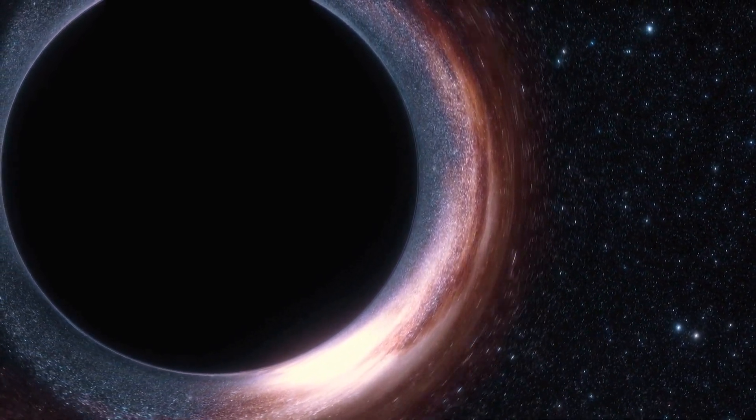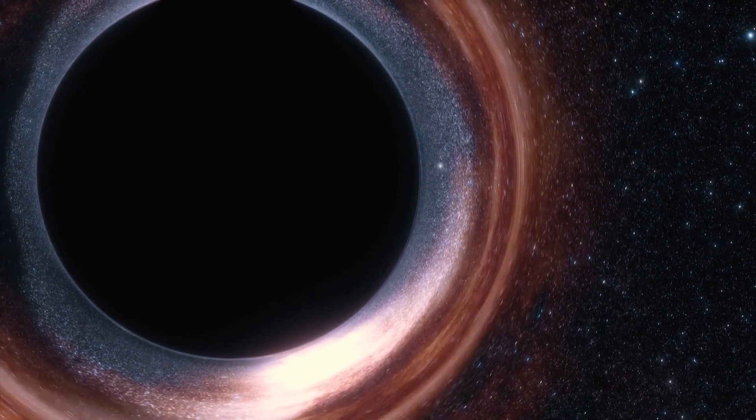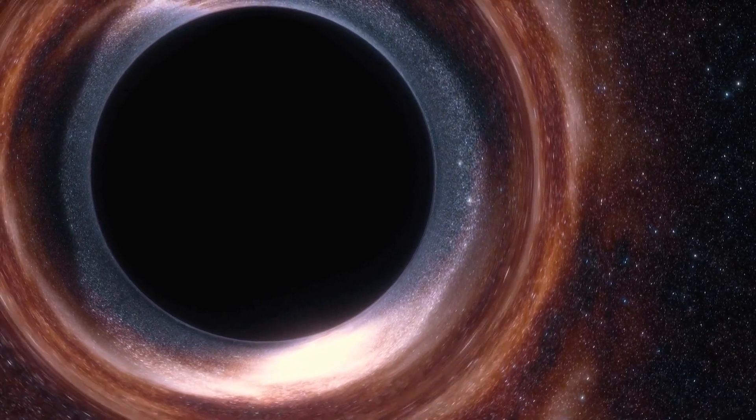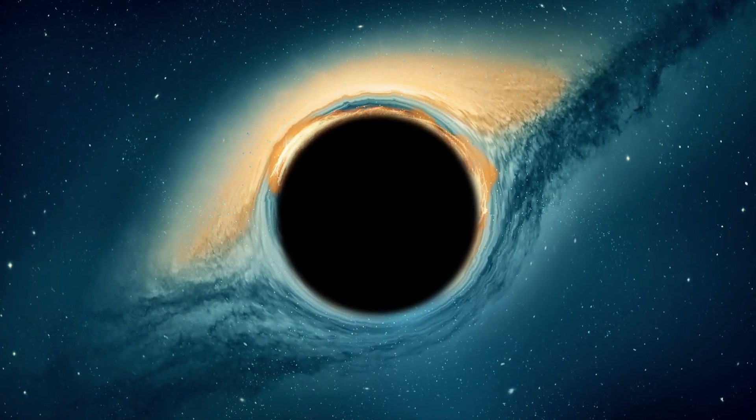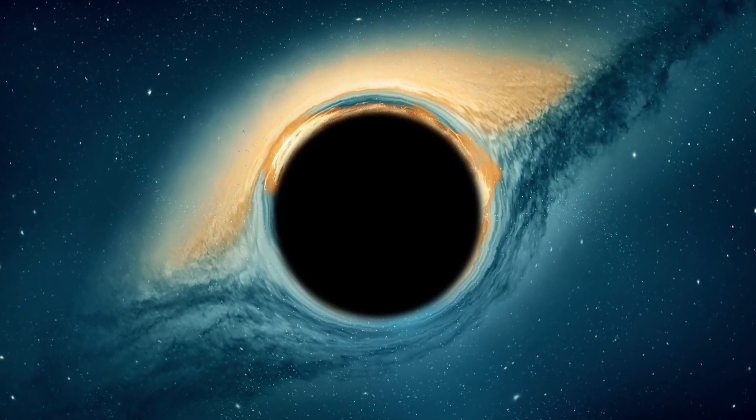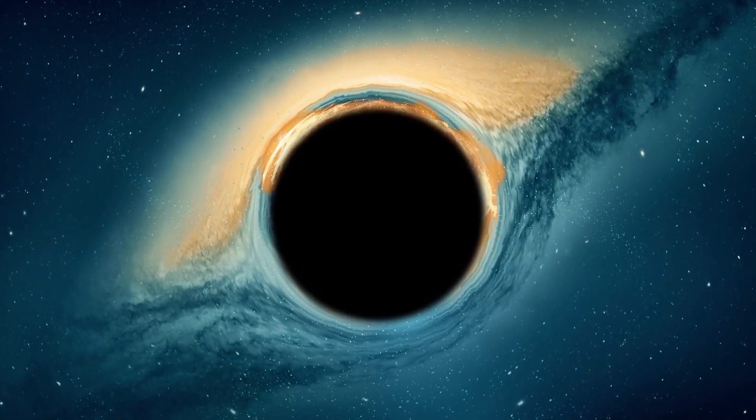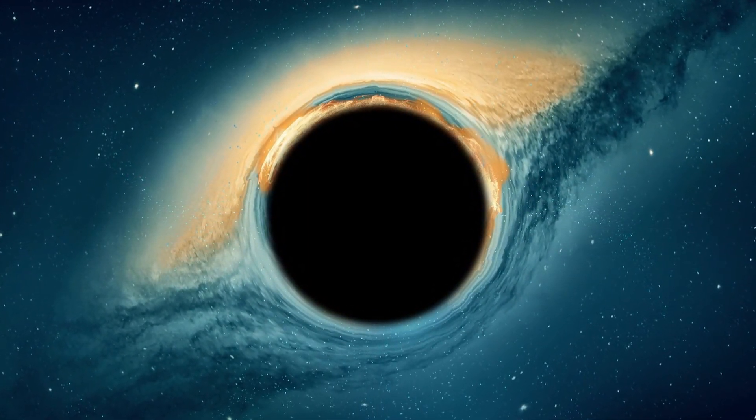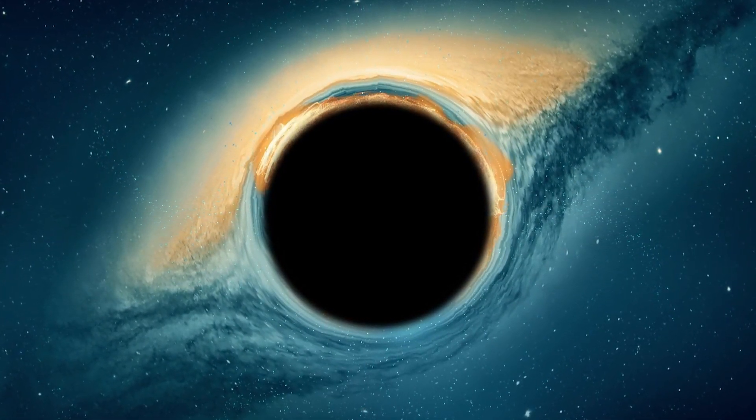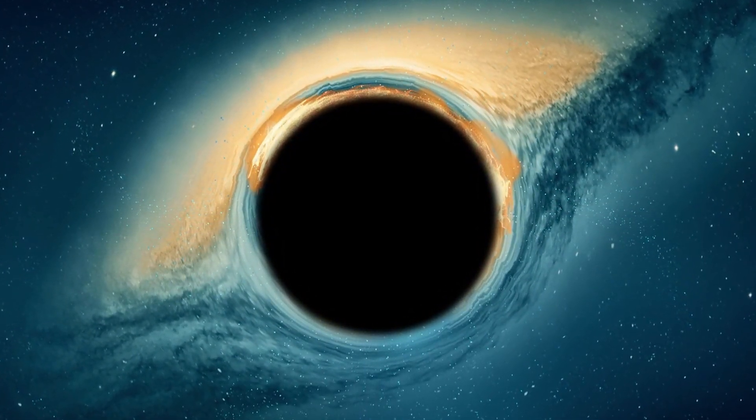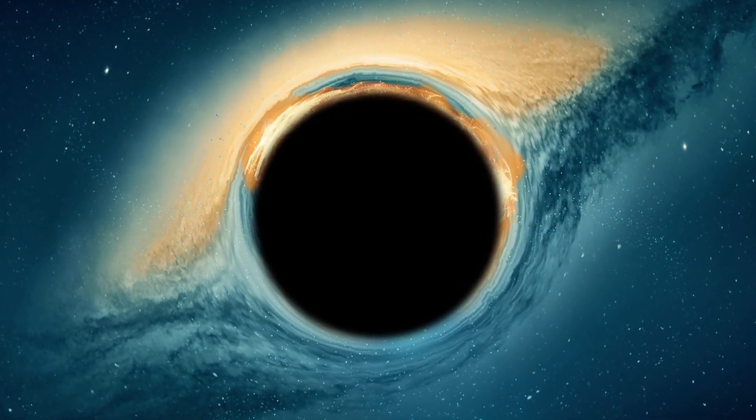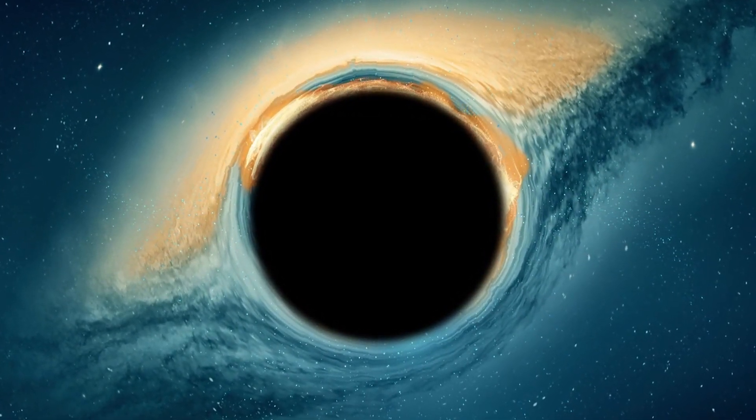As we well know, black holes possess extremely powerful gravitational force that even light cannot escape. However, in the vicinity of a black hole, one often finds a spinning disk of material, such as gas or dust, concentrated by its immense gravity. This material heats up as it spirals towards the black hole, emitting X-rays and other types of radiation, creating a luminous ring known as a corona.